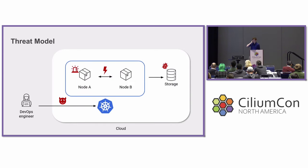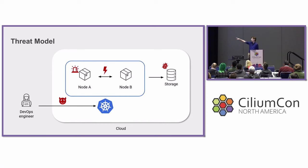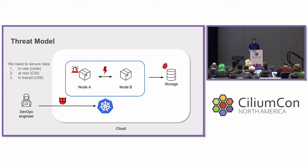Let's do a bit of threat modeling. For us, threats are everywhere in the cloud — ranging from the connection towards the Kube API, towards the nodes itself, and of course in transit and in storage. How do we go about securing against all these threats? We need to secure data in use, at rest, and in transit.